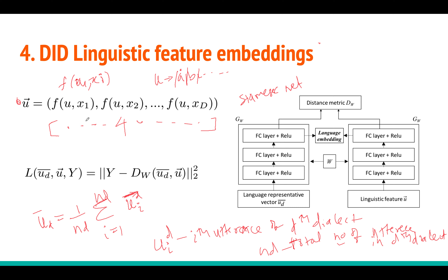You can do the same thing with words. You may have 100,000 words in your dataset — doing the same thing produces a very long and very sparse vector. You can do the same with characters as well.